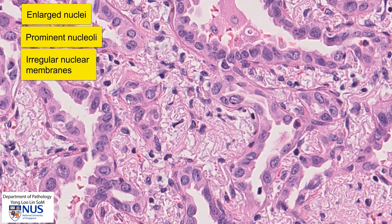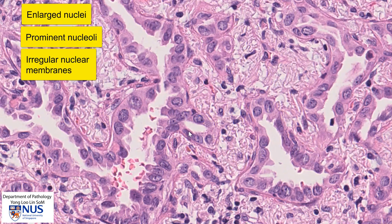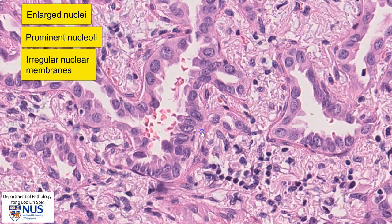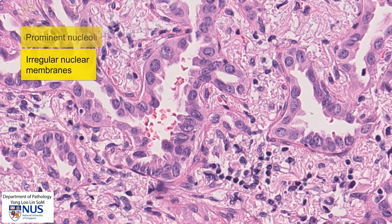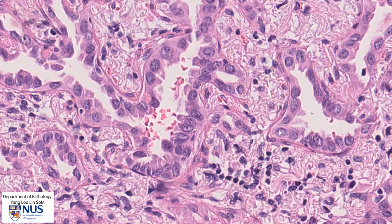Again, you can see the irregularity of the nuclei. So we have nuclear enlargement, irregular nuclear membranes, and prominent nucleoli — these are features of malignancy. Another feature seen here is the raised nucleus-to-cytoplasm (NC) ratio, meaning the nucleus is relatively large and occupies a lot of space in the cell relative to the cytoplasm. We have high or raised NC ratios here. And again, you can see the prominent nucleoli in the malignant cells.